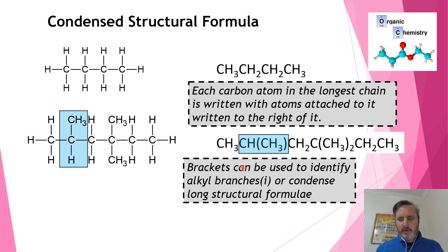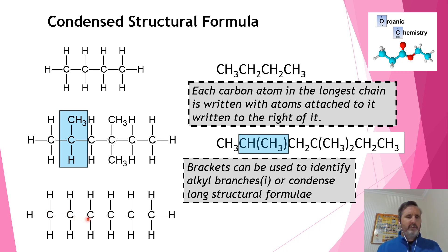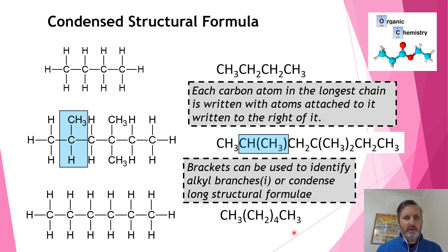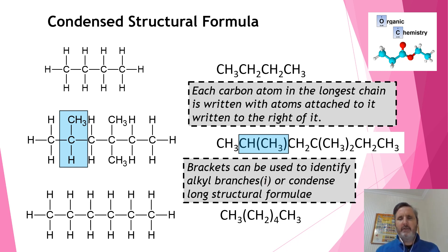There's another use of brackets in condensed formulas. For a straight-chain molecule like CH3CH2CH2CH2CH2CH3, we can shorten this by writing CH3(CH2)4CH3, where the subscript four shows there are four CH2 groups in a row. This shorthand is particularly important when we get to long molecules like those found in fats and oils, which we'll look at later in this topic.